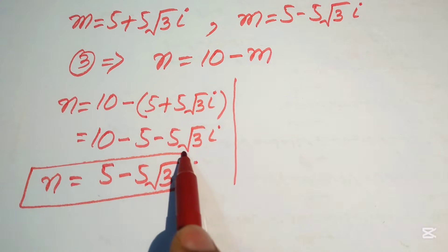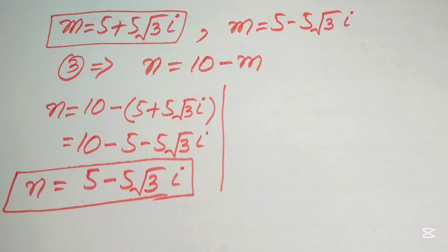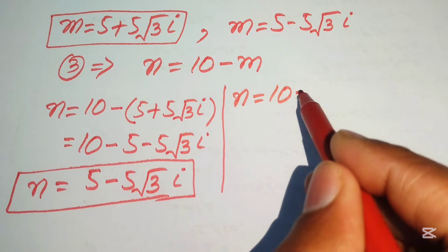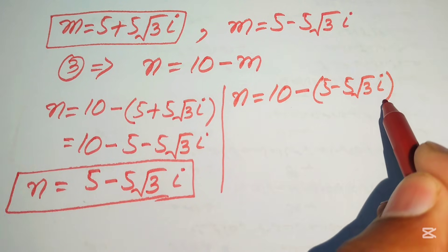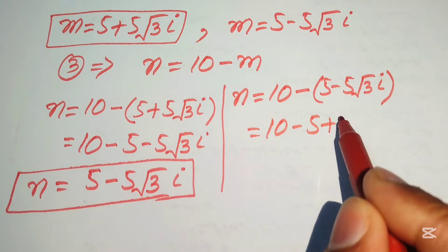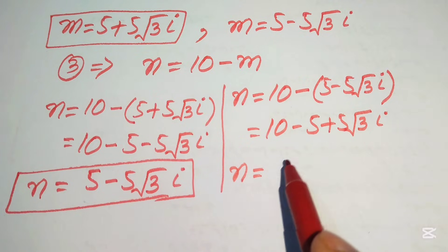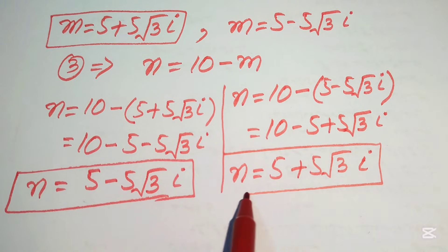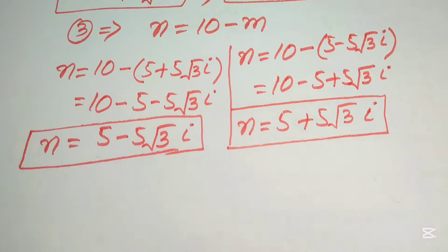For the second case, substituting m equals 5 minus 5 root 3 iota into n equals 10 minus m gives n equals 10 minus 5 plus 5 root 3 iota, which simplifies to n equals 5 plus 5 root 3 iota.